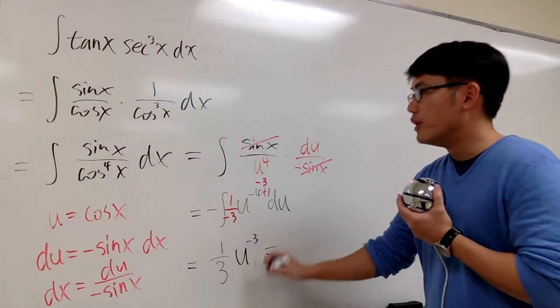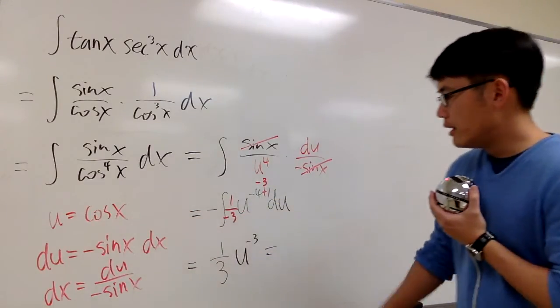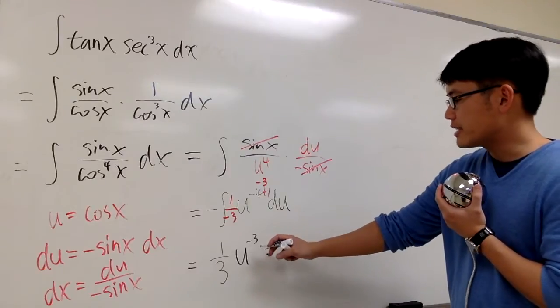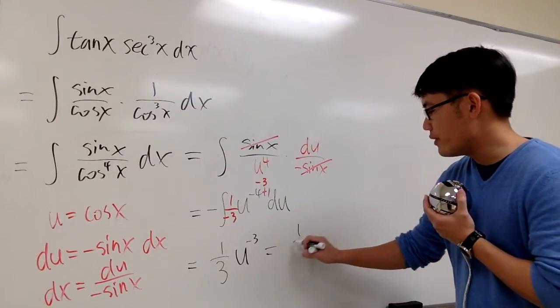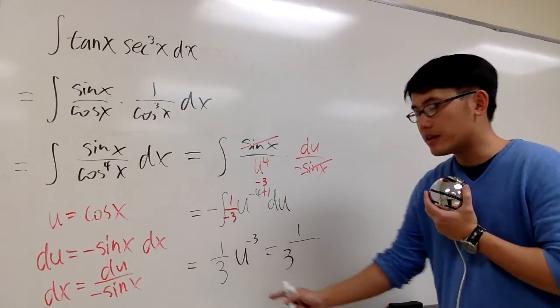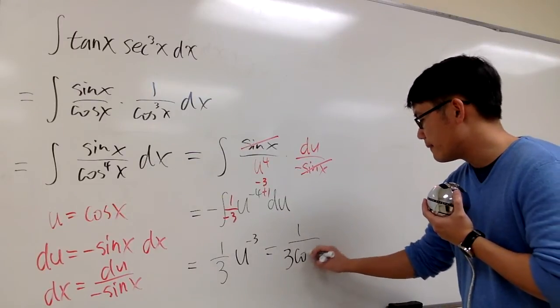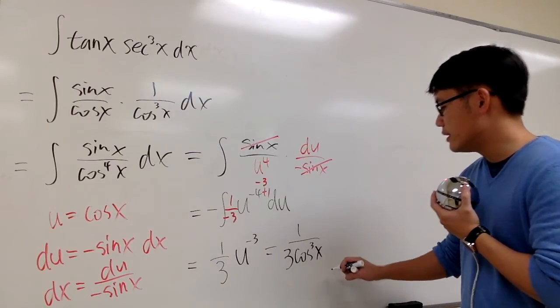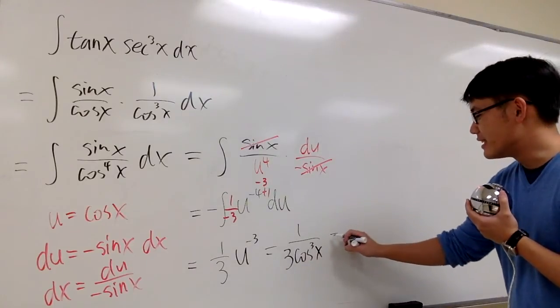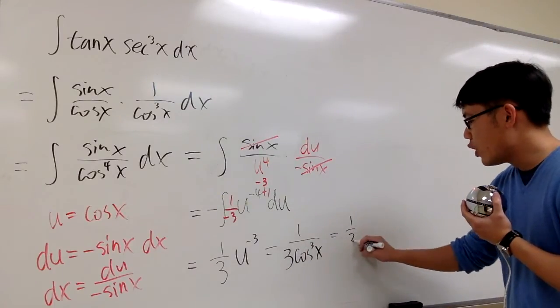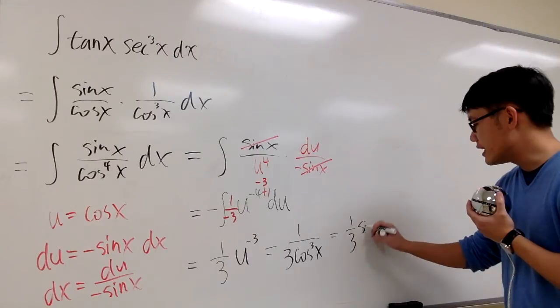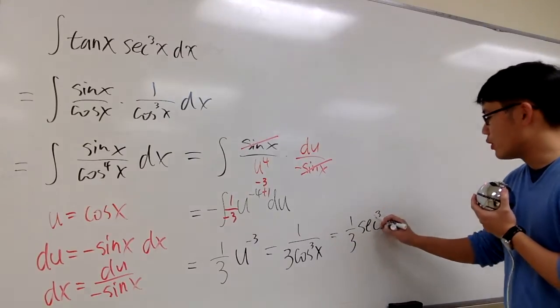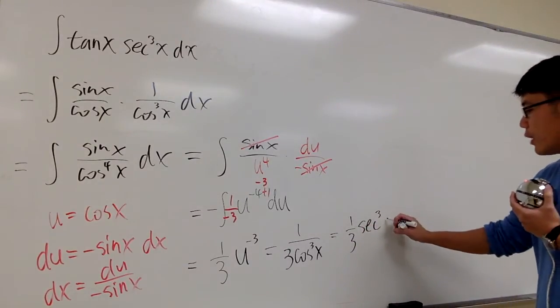But what's u? u is the same as cosine, and this is the negative exponent, so this is the same as one over three. Bring this down to the denominator and change that to cosine to the third power x. And what's this? This is the same as one-third. One over cosine is the same as secant, but then we have third power, so one over three secant to the third power x.